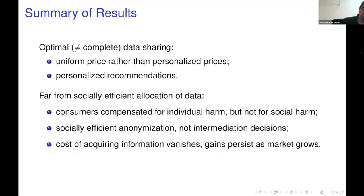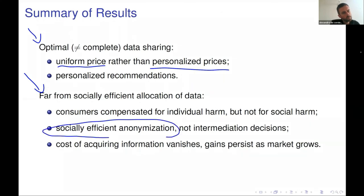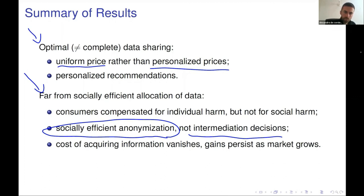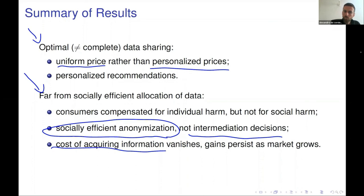To summarize what we found: optimal data sharing is not complete; it yields uniform prices rather than personalized prices; but that still means we are far from the socially efficient allocation of data. The anonymization decision in the most general result is made in a socially efficient way — but not the overall intermediation decision. So in that sense the broker goes with the efficient anonymization choice, but may still intermediate information anonymously in a way that degrades total surplus. Additionally, the cost of information acquisition vanishes as the market grows, while revenues grow linearly.